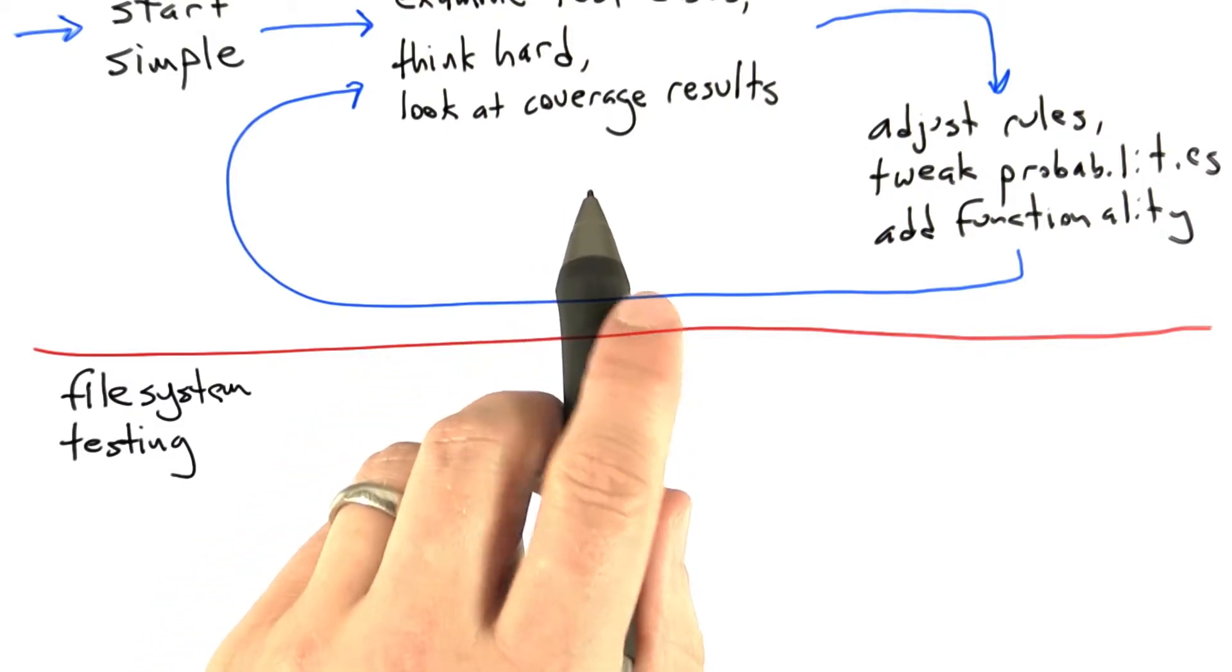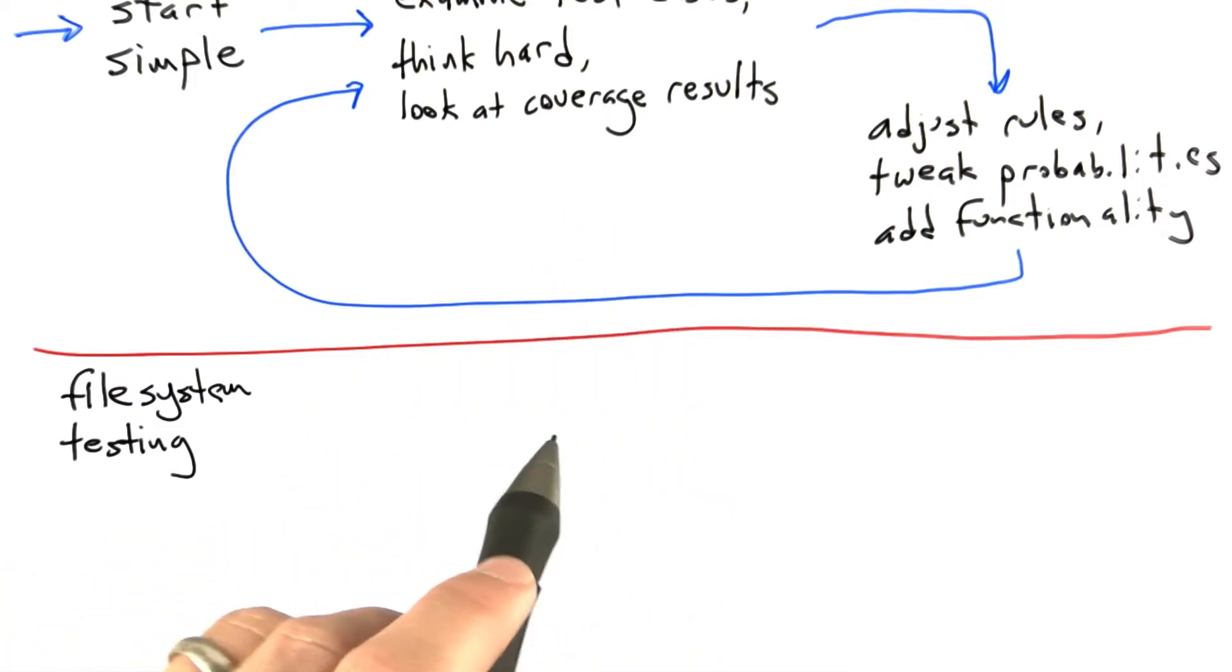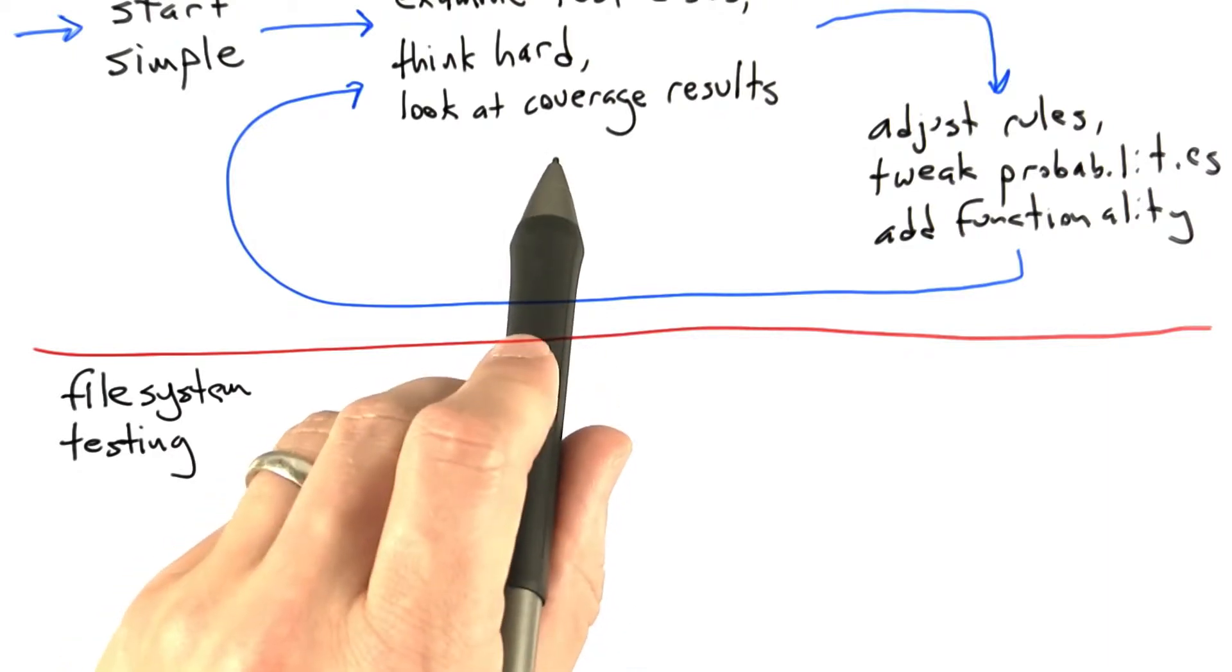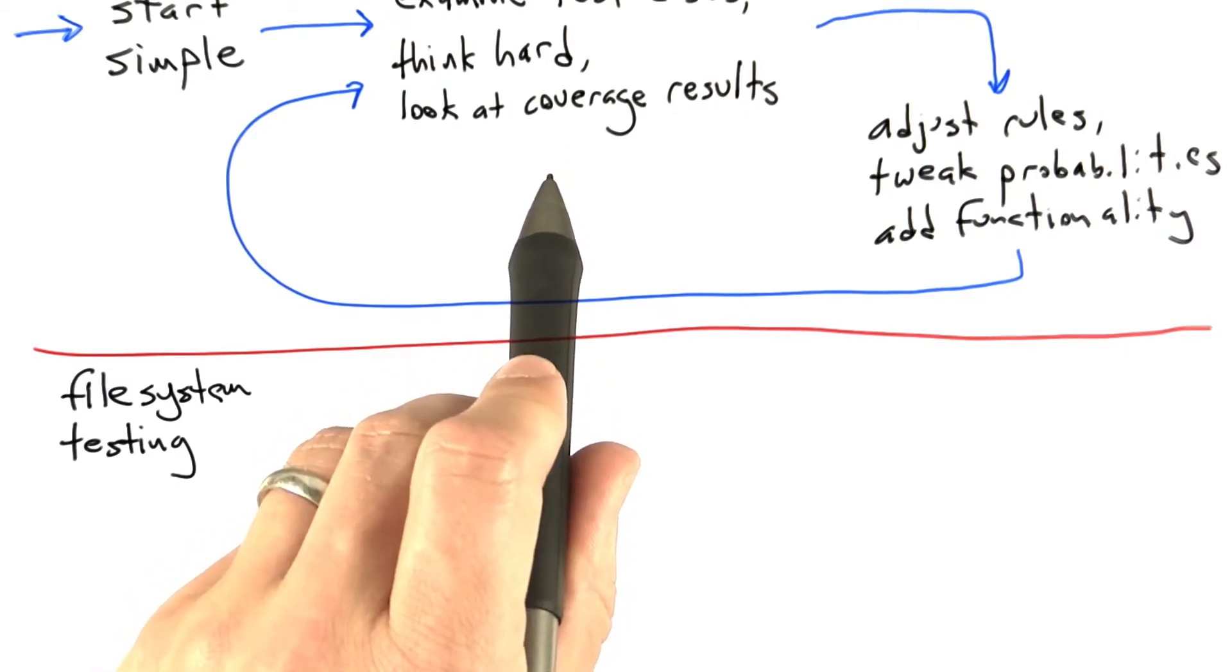Then we'll look at the results and think about them. What we'll see is that probably our testing is highly suboptimal. For example, if we're throwing unmount calls randomly into the mix, we'll end up operating on an unmounted file system at least 50% of the time on average.